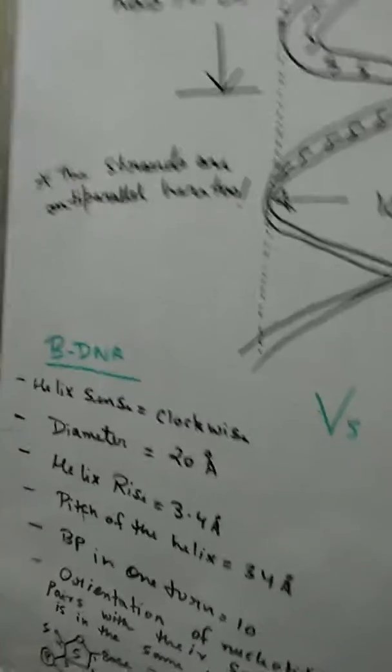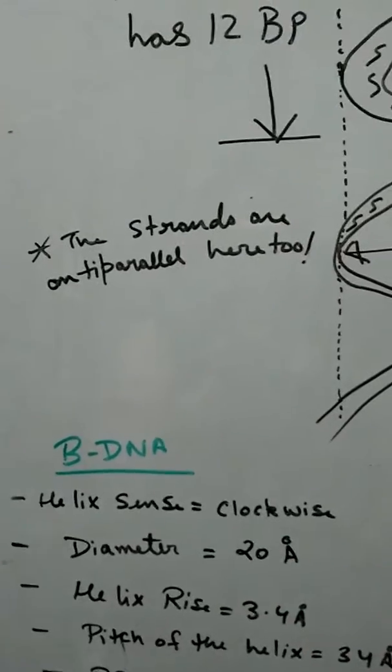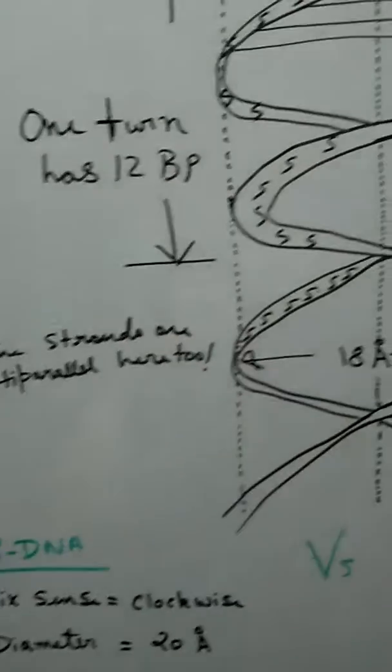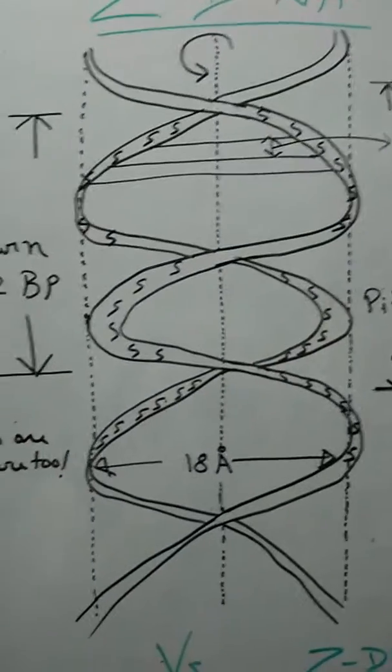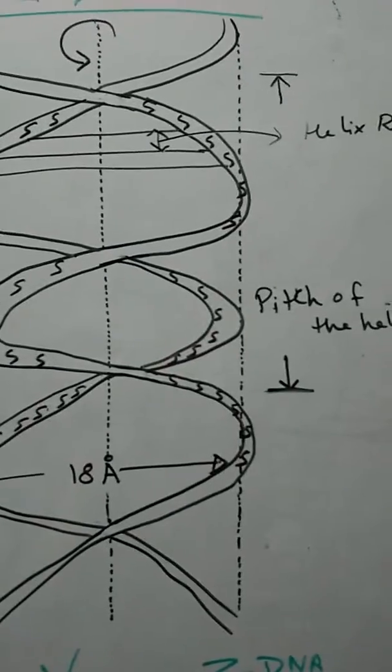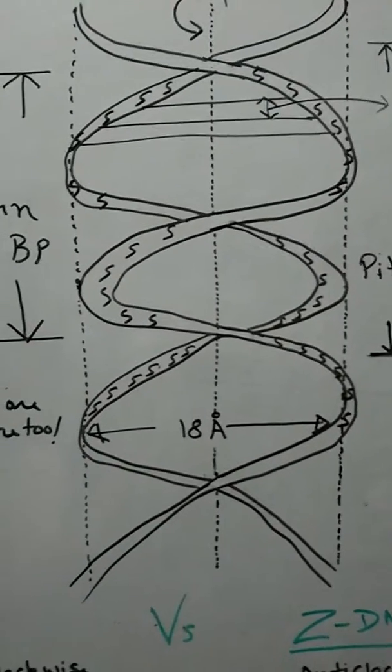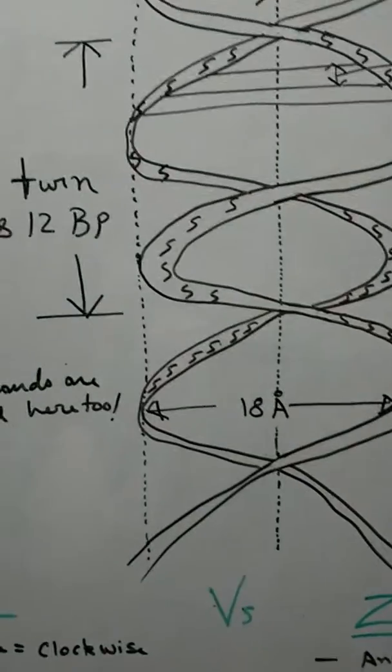Now before I start the differences, the strands are anti-parallel here as well. So you will get 5 prime to 3 prime direction and also 3 prime to 5 prime direction of the two polynucleotide chains. Now the differences.